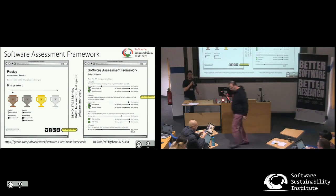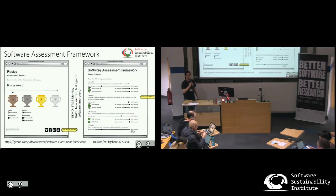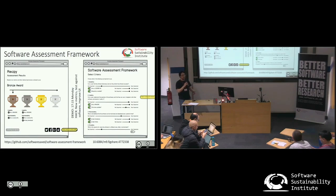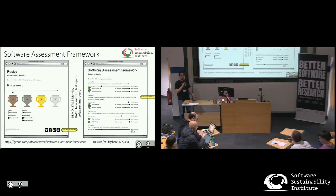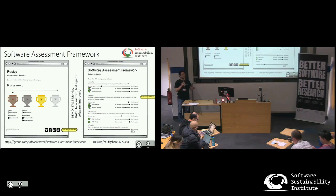I'd like to talk about something called the Software Assessment Framework, which is a project that we've been working on for some time to make it easier to understand how to assess your software. This is a way of building in a number of metrics — both ones that you can automatically generate and ones which are human-defined and human-assessed — to come up with an idea of how good your software is. This is quite difficult because when you're talking about software quality, you're really talking about understanding how well your software meets the future needs of someone you've never met.